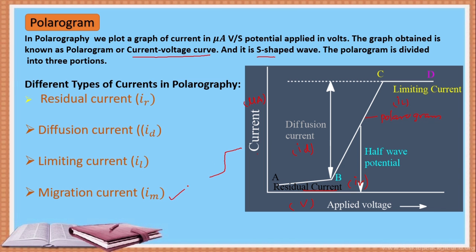One more current is migration current. Migration current is due to the migration of ions from the analyte solution towards the dropping mercury electrode when a potential is generated. So the different types of current in polarography are: residual current (ir), diffusion current (id), limiting current (il), and migration current.